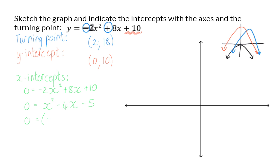Next, we can factorize the right-hand side. And now we can say that the x-intercepts are at x is equal to 5, or x is equal to minus 1.